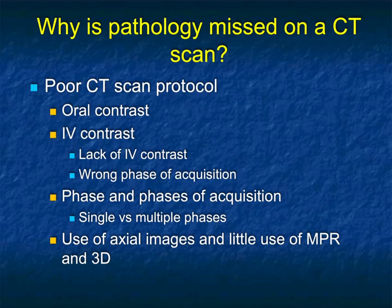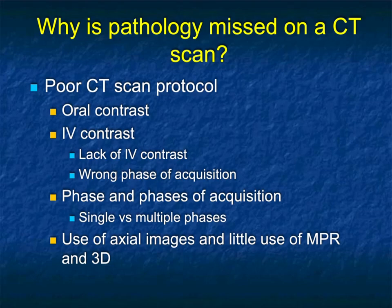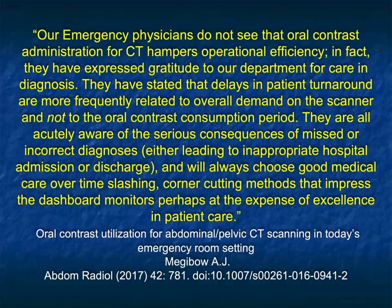When you look at the GI tract, and truthfully when you look at any part of CT, why are things missed? Sometimes things are too small. Sometimes you make assumptions that may be incorrect, but often it's poor protocols — whether it's the lack of oral contrast or the lack of IV contrast, or the wrong phase of acquisition. We also speak about the importance of MPR and 3D imaging to help with diagnosis, but so much relates to the protocols with oral and IV contrast material.